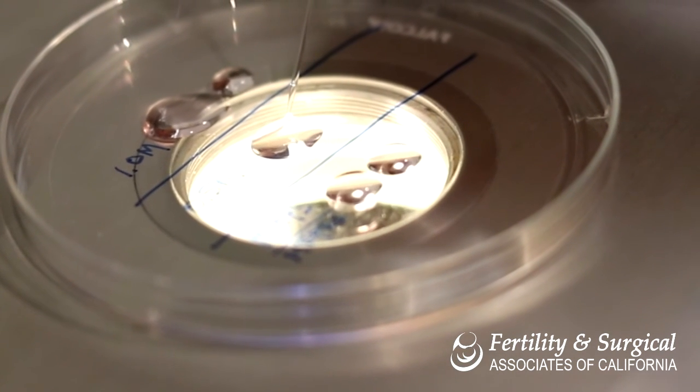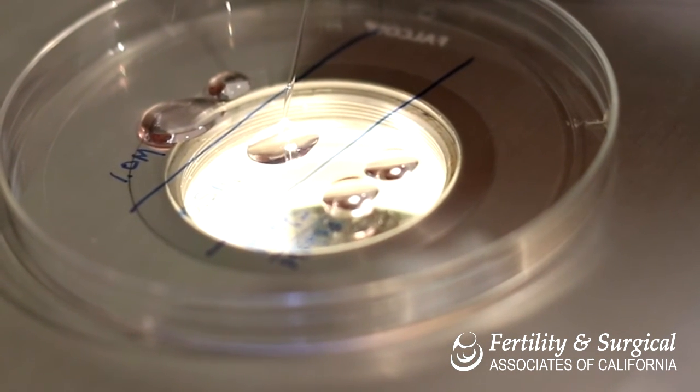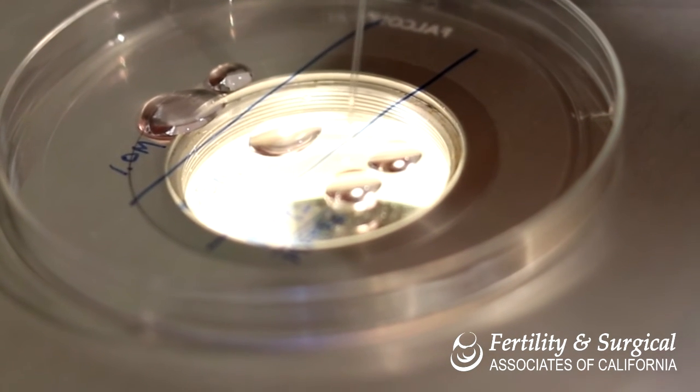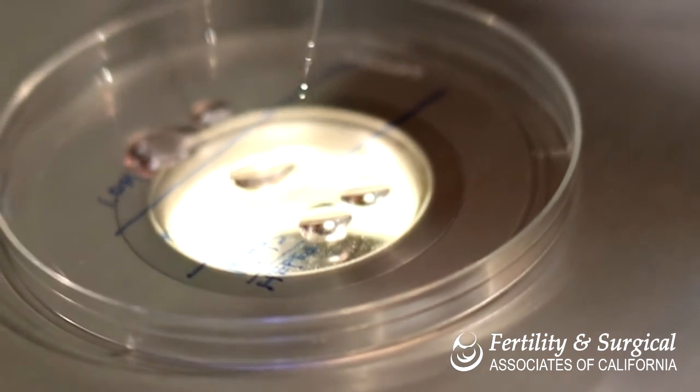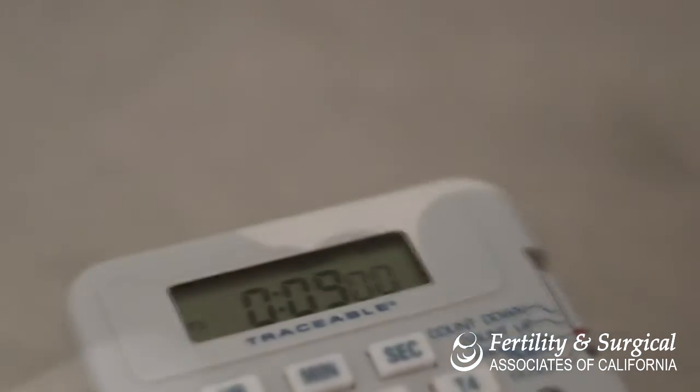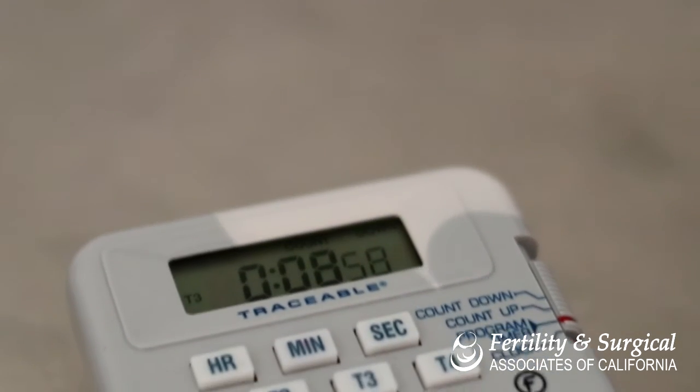Step 6: When there are approximately 30 seconds remaining, make a third drop of MOPS solution. Transfer the embryos to the third drop and set the timer for 9 minutes.